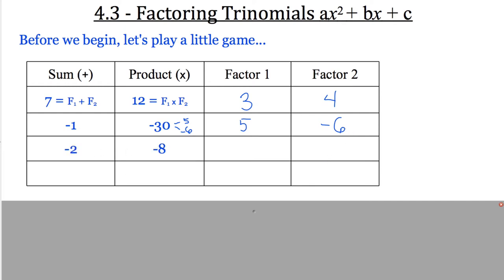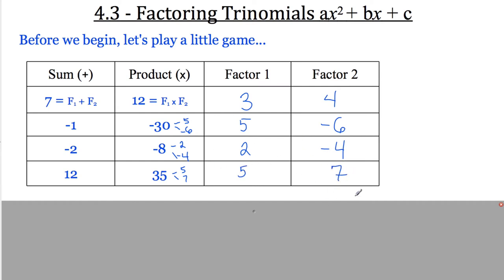Let's try one more. Two numbers that add to make negative 2 and multiply to make negative 8. Going through factors: 1 and 8, no. 2 and 4 — they're 2 away from each other. Which one needs to be negative? The 4 does. So my factors are 2 and negative 4. One last one: two numbers that multiply to make 35 and add to 12. 1 and 35 won't. The only other factors of 35 are 5 and 7, and in fact 5 plus 7 is 12. So if you feel pretty good at this game, you're going to have no problem factoring trinomials — because it's those two steps you're going to want to use.